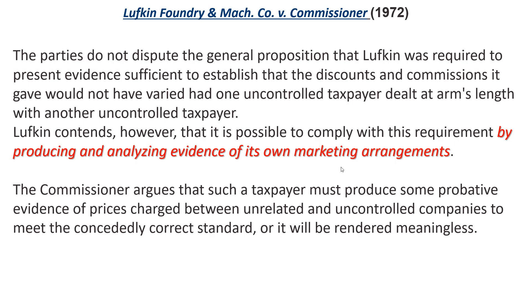Which moves us to Lufkin Foundry. Here in 1972: 'The parties do not dispute the general proposition that Lufkin was required to present evidence sufficient to establish that the discounts and commissions it gave would not have varied from one controlled taxpayer at arm's length with another.' So this judge is saying both the treasury and the taxpayer agree that you have to look at the arm's length standard. But Lufkin, the taxpayer, wanted to present another method: 'Lufkin contends it's possible to comply with the requirements by producing and analyzing evidence of its own marketing arrangements.'